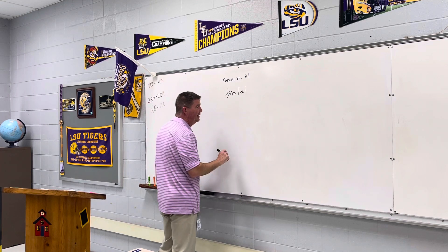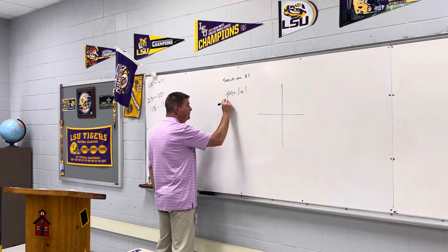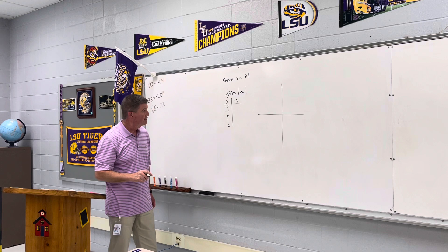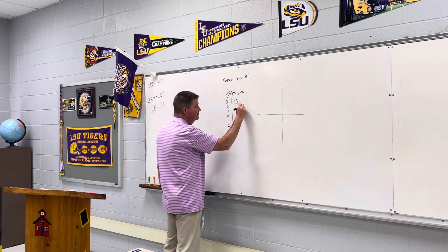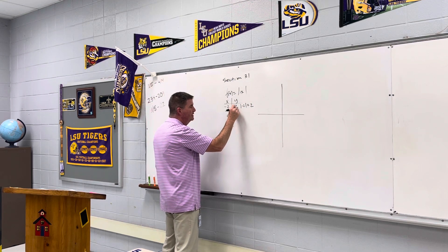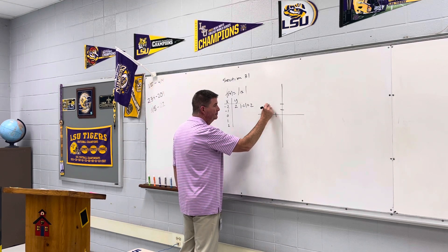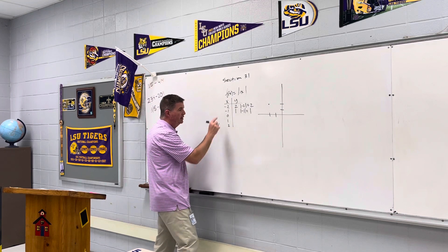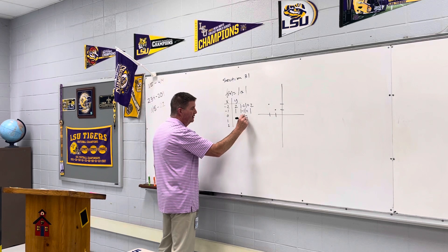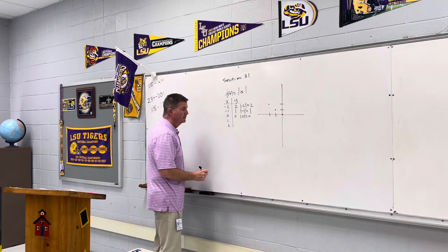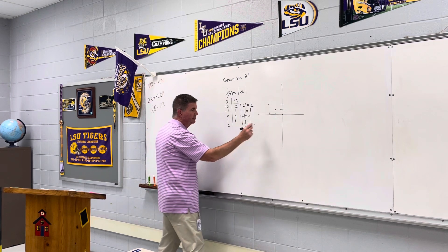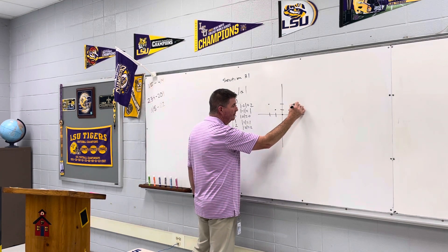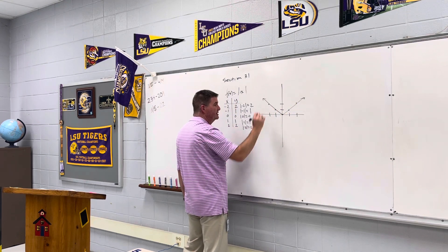Example 1: Graph f(x) = |x| on a coordinate plane. Making a chart from x = −2 to 2: |−2| = 2, giving point (−2, 2); |−1| = 1, giving (−1, 1); |0| = 0, giving (0, 0); |1| = 1, giving (1, 1); and |2| = 2, giving (2, 2). Just as expected, this makes the shape of a V.